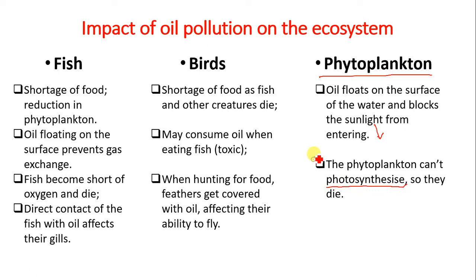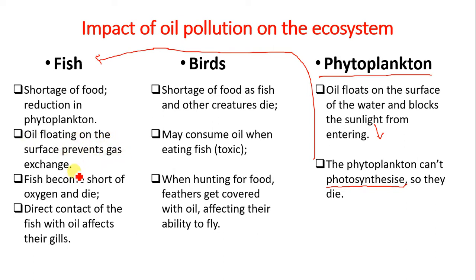Once phytoplankton die, it affects the fish population — there is a shortage of food due to reduction in phytoplankton. Additionally, oil floating on the surface prevents gas exchange, reducing the amount of oxygen in the water. Fish become short of oxygen and die. Direct contact of fish with oil also affects the gills, and their movement is hindered.